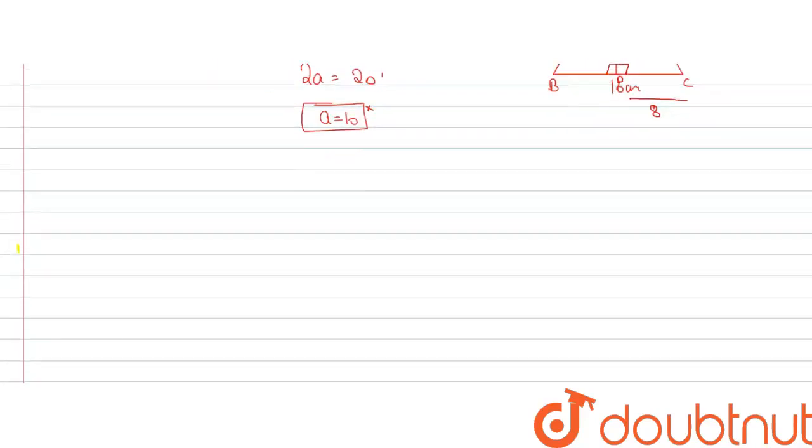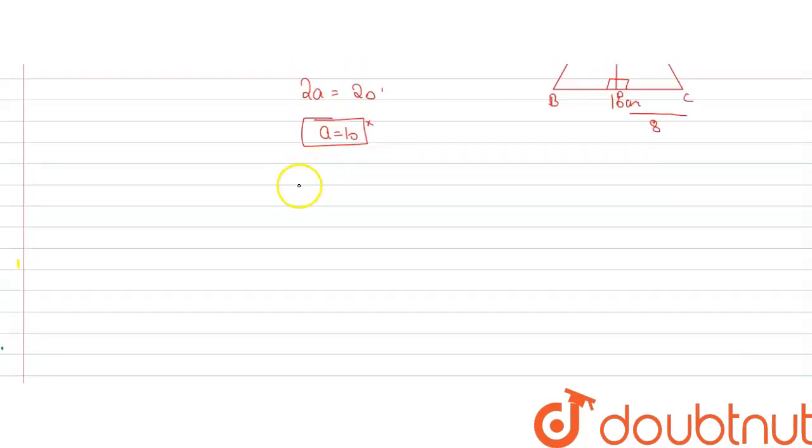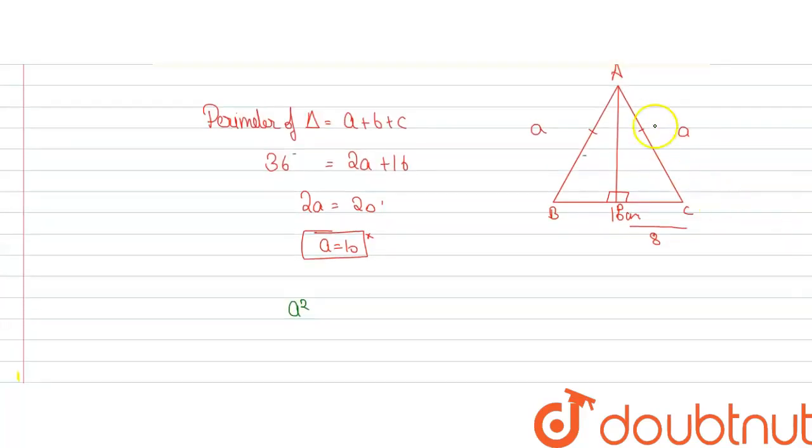Now since this is a right-angled triangle, we will get A squared equals height squared plus 8 squared.